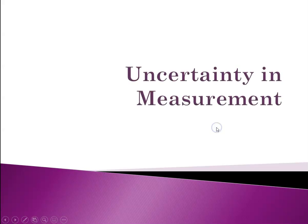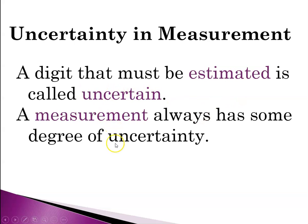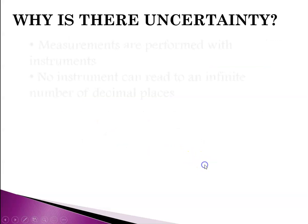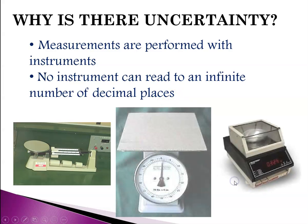Hello class, this is Miss Augustine and we're still in chapter 2. Today we're going to talk about uncertainty in measurement. A digit that must be estimated is always called uncertain. For example, if I measure a desk and I say it is one and a half Augustine arms wide, that last part — one and a half — is the uncertain part. A measurement always has some degree of uncertainty, and it depends on what you're using as your measuring device. Measurements are performed with instruments, and no instrument can read to an infinite number of decimal places.